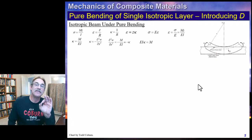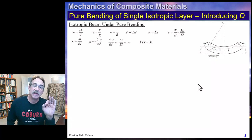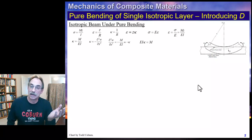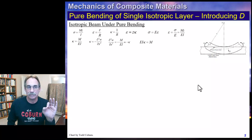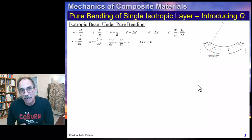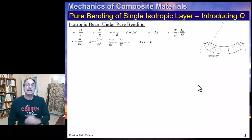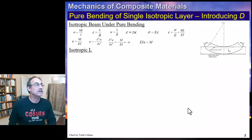We then found that EI times the second derivative of deflection was equal to the moment, and that's how we solved a lot of beams in our Structural Mechanics I classes. This is all old news — it applies to isotropic beams, and it would also apply if you had a laminate where every single layer is isotropic, because you wouldn't be able to differentiate between those if they're all the same material.